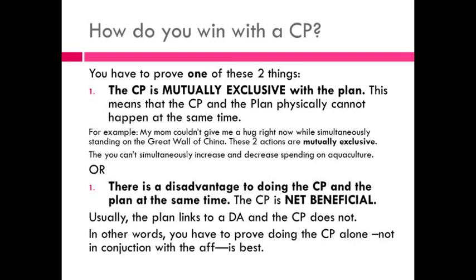So how do you win with a counter plan? You have to prove one of two things. First, the counter plan is mutually exclusive with the plan, meaning the counter plan and the plan physically cannot happen at the same time. For example, my mom couldn't give me a hug right now while simultaneously standing on the Great Wall of China — those two actions are mutually exclusive. Or you can't simultaneously increase and decrease spending on aquaculture. Alternatively, you can prove there's a disadvantage to doing the counter plan and the plan at the same time, meaning doing them together is a bad idea. Usually this means proving the plan links to a disadvantage and the counter plan does not — so the counter plan alone, not in conjunction with the affirmative, is best.